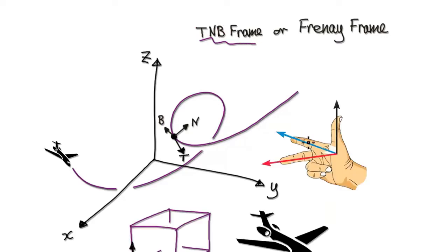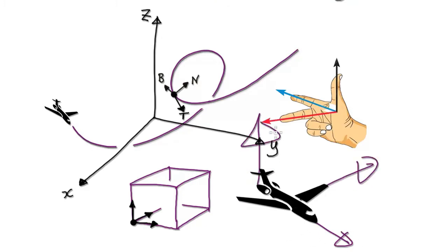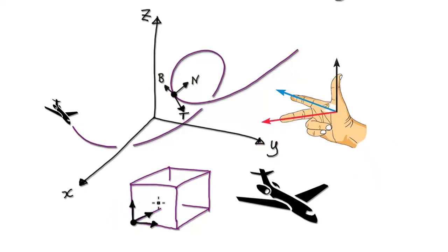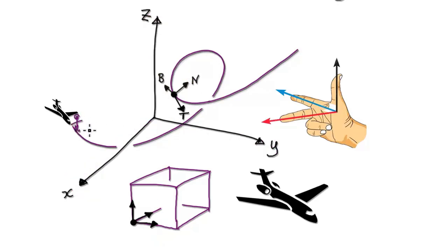The idea behind the TNB frame is this: imagine a plane flying along a path. The tangent is always in the direction of the plane, and the other two vectors are always at 90 degrees with each other. If we work in terms of the TNB frame rather than X, Y, and Z, some calculations become a lot easier to work with when referenced in terms of the pilot.